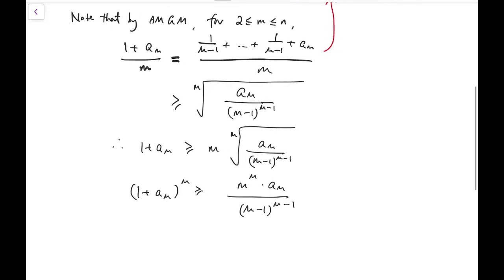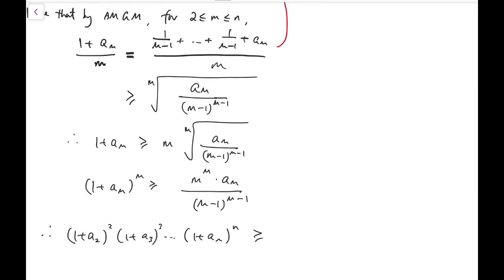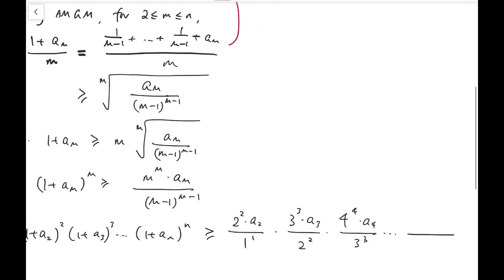Now because this holds for all m from 2 to n, therefore the product of (1+aₘ)^m is greater than or equal to... We write out each of the terms, it would take some length: 2² · a₂/1¹, then 3³ · a₃/2², then 4⁴ · a₄/3³, and multiply all the way up to n^n · aₙ/(n-1)^(n-1).